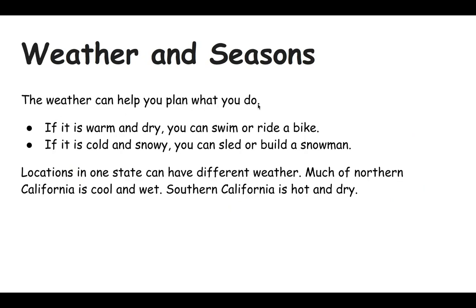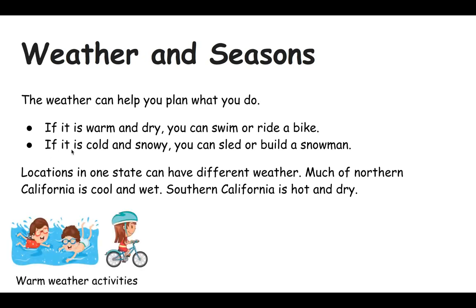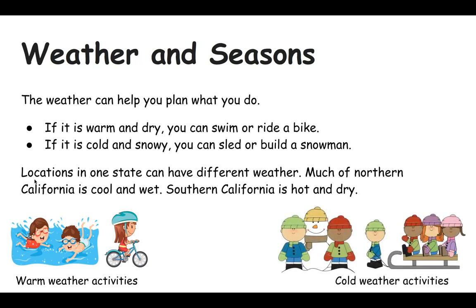If it is rainy you can wear a raincoat and boots. The weather can help you plan what you do — if it is warm and dry you can swim or ride a bike; if it is cold and snowy you can sled or build a snowman. Locations in one state can have different weather: much of Northern California is cool and wet, while Southern California is hot and dry. So even though Northern California and Southern California are in the same state, because they're in different locations they have different weather, and that affects what people do, what they wear, and how they travel around.